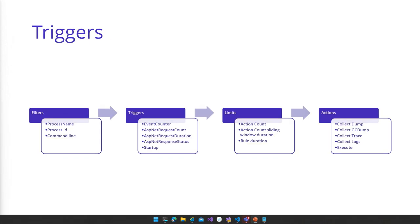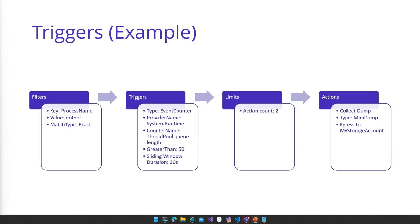The second operating mode is trigger-based collection, where .NET Monitor constantly monitors your process. For example, if I'm worried about ThreadPool starvation, I can configure: when you see a process named .NET with a ThreadPool queue length counter greater than 50 for a sustained period of 30 seconds, go ahead and collect a mini dump and store it in my configured Azure Blob Storage account. And since dumps are expensive and can be prohibitively large, I also want to make sure this doesn't run more than two times.